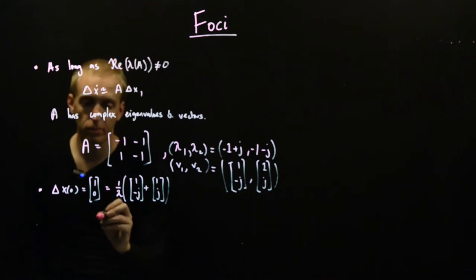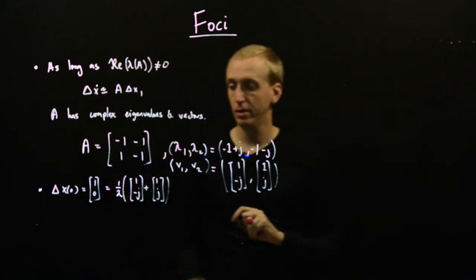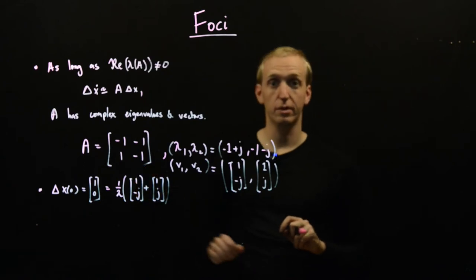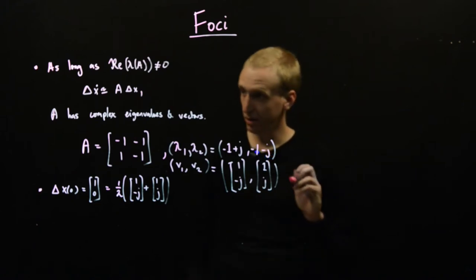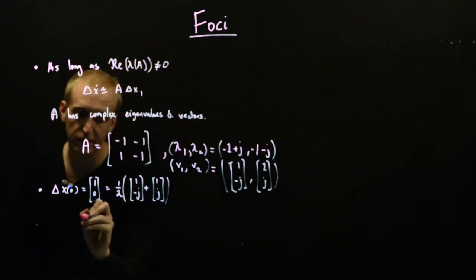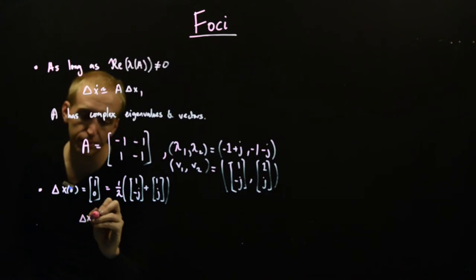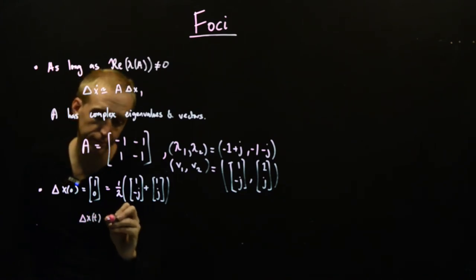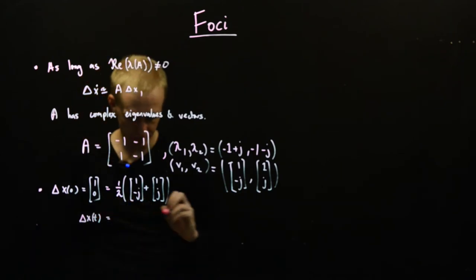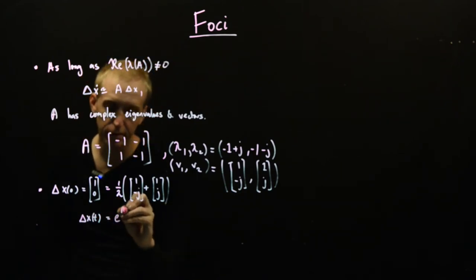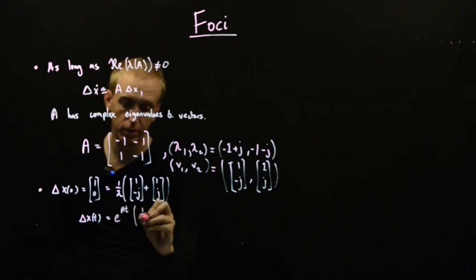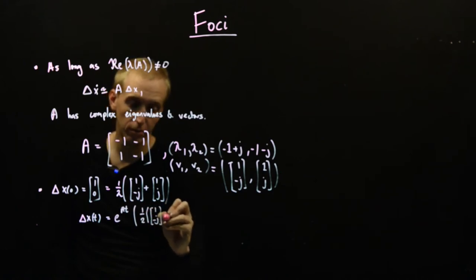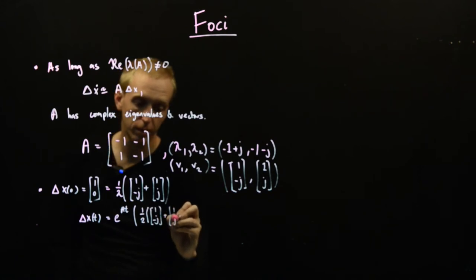We know that given an eigenvector, our solution can be written just in terms of the eigenvalue. This tells us that delta x is equal to e^(At) multiplied by our initial condition, which is now 1/2 of (1, -j) + (1, j).